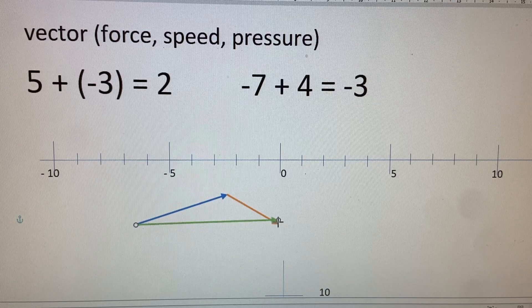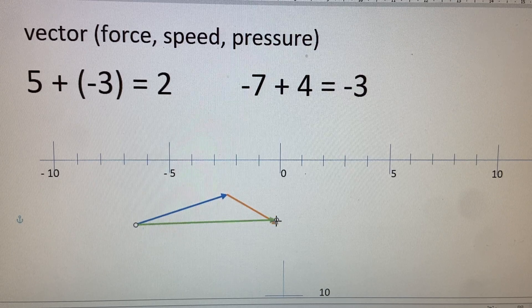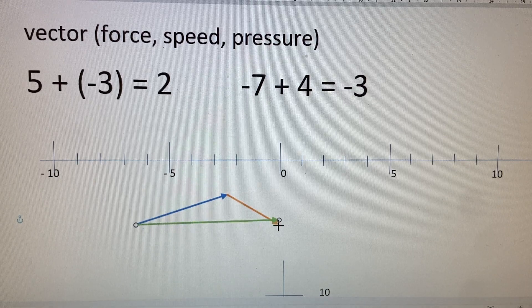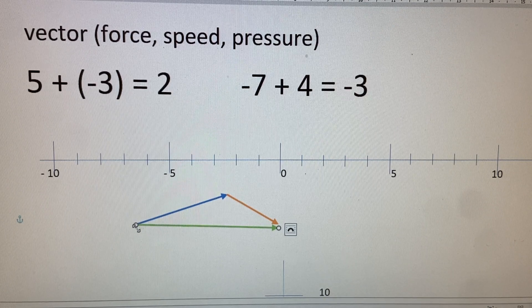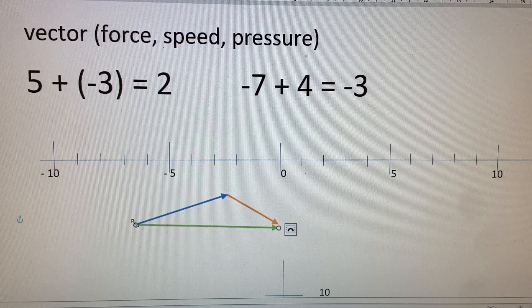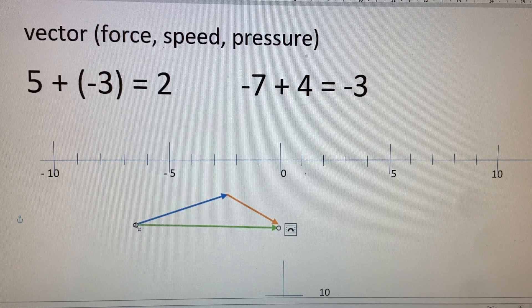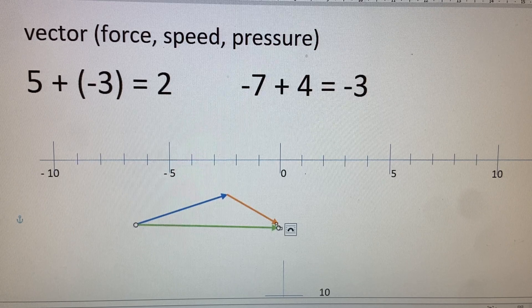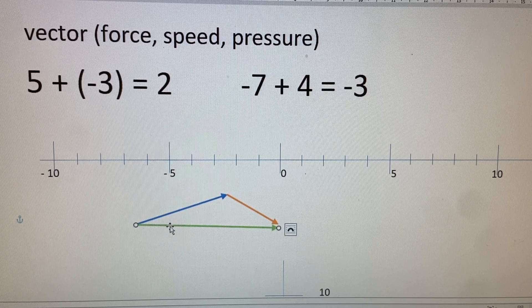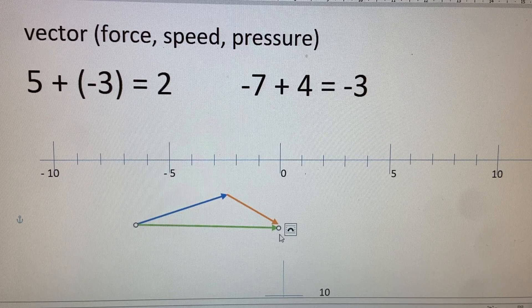The green arrow, the resultant force here, that's exerted at where the first force vector starts, and points to where the last or second force vector ends up. So this is how forces work in physics.